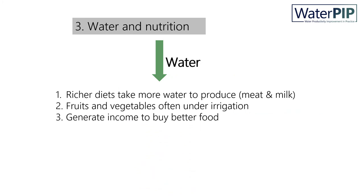Lastly, let's look at the link between water and nutrition. Richer diets take more water to produce, mainly because of livestock products — meat and milk — as we already saw earlier. Fruits and vegetables are often cultivated under irrigation and hence require water. Access to water also generates income to buy better food, and hence better nutrition.